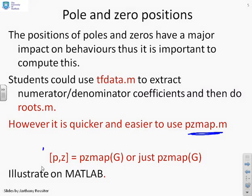Tell me where the poles and zeros are. So there's two obvious ways of using this. You can use this one here. p comma z equals pzmap brackets g. And that will put the poles in position p and the zeros in position z.